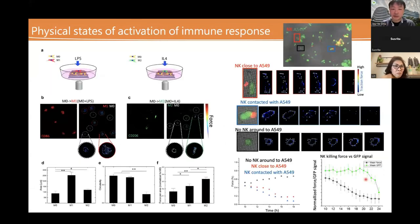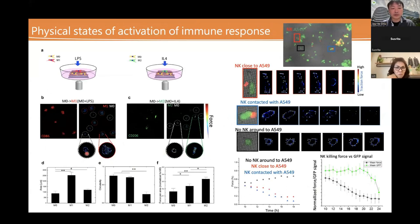Another application is for cell therapy — for example, CAR-T therapy, which is now popular. This system can also monitor, using the mechanical fingerprint, the activation of the immune response. For example, we can monitor macrophage polarization from M0 to M1 or M0 to M2 — they also have quite different mechanical fingerprints. We can also use the system to understand immune-cancer interaction by looking at lung cancer cells: when we add immune cells, the immune cells interact with the cancer cells and reduce the magnitude of the mechanical force over time.